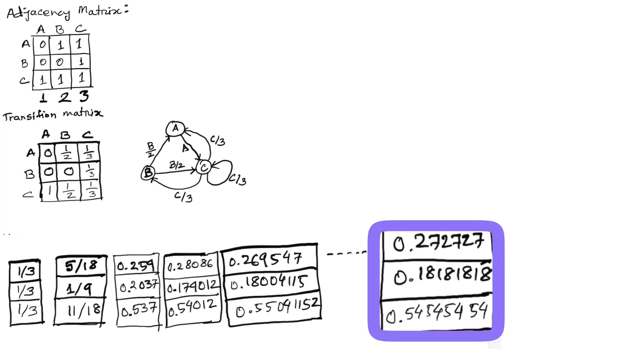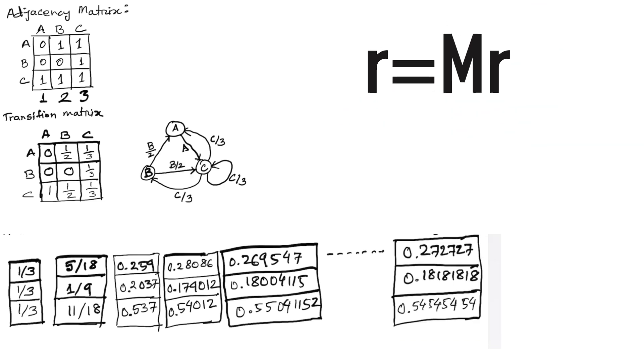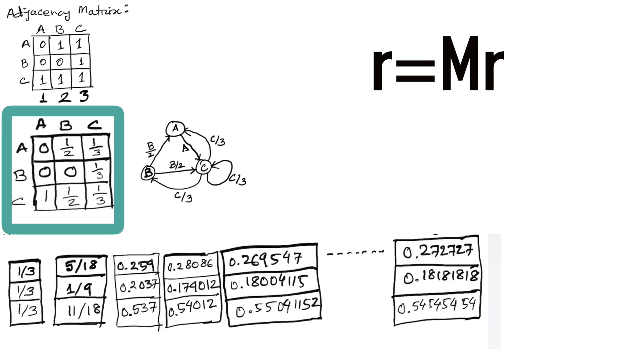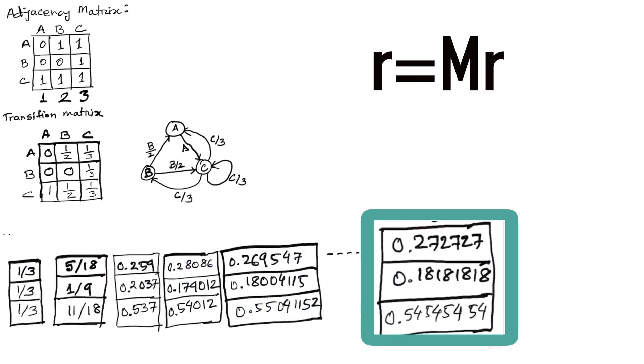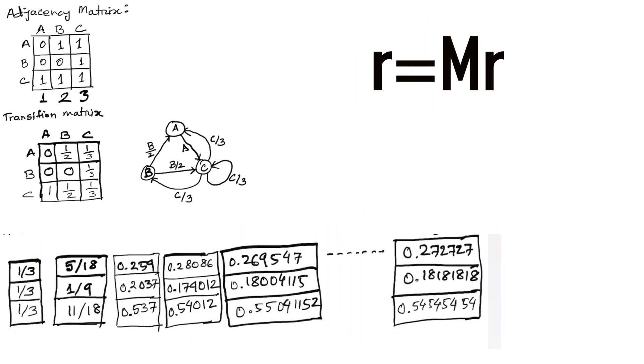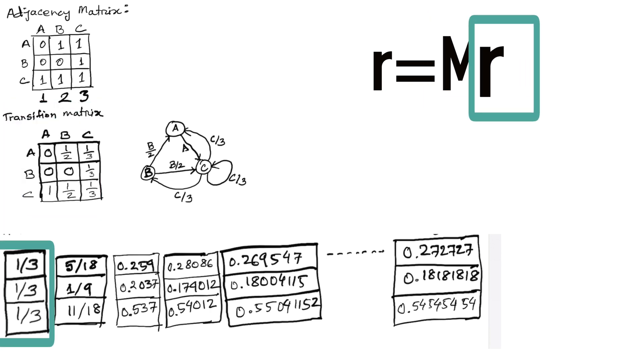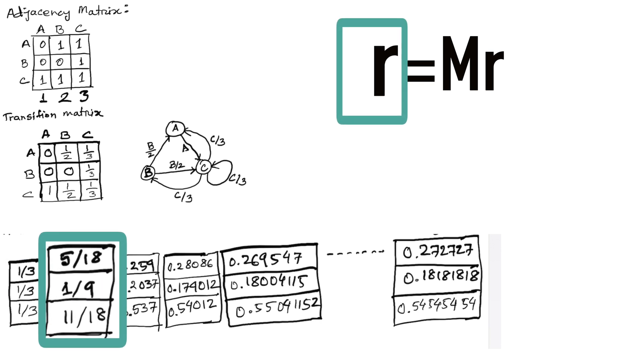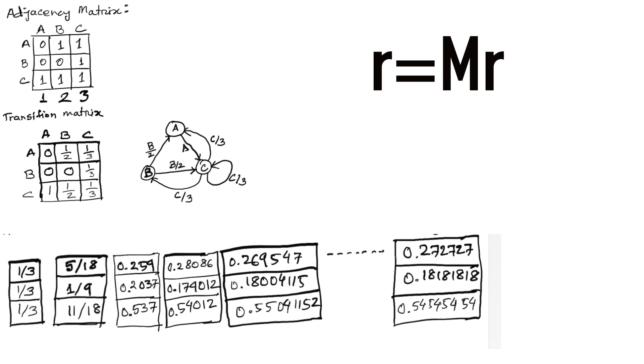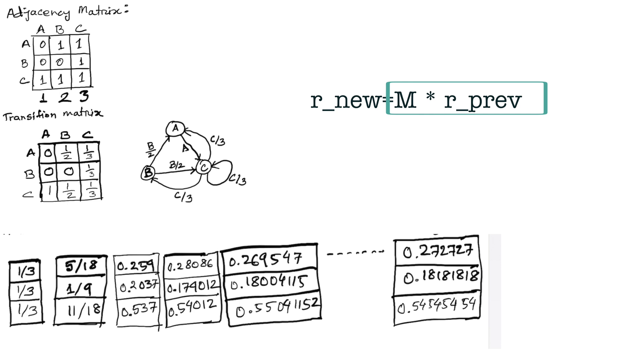This process can be written using this formula: r equals M times r, where M is the transition probability matrix and r is the rank vector. On the right side we multiply the transition matrix by the column vector version of the page rank vector. The result will be a column vector. In a programming style we will write M times the previous rank vector r_prev on the right side. The resultant column rank vector will be kept in the variable r_new.